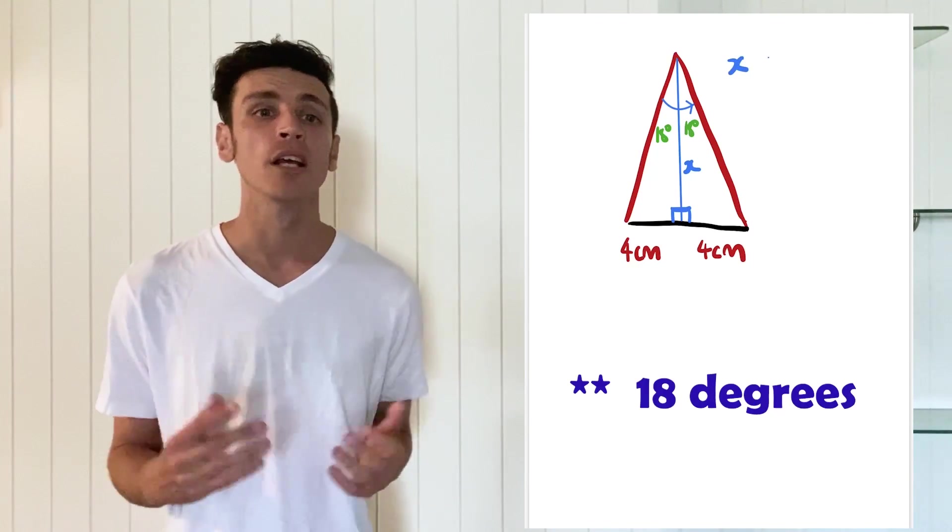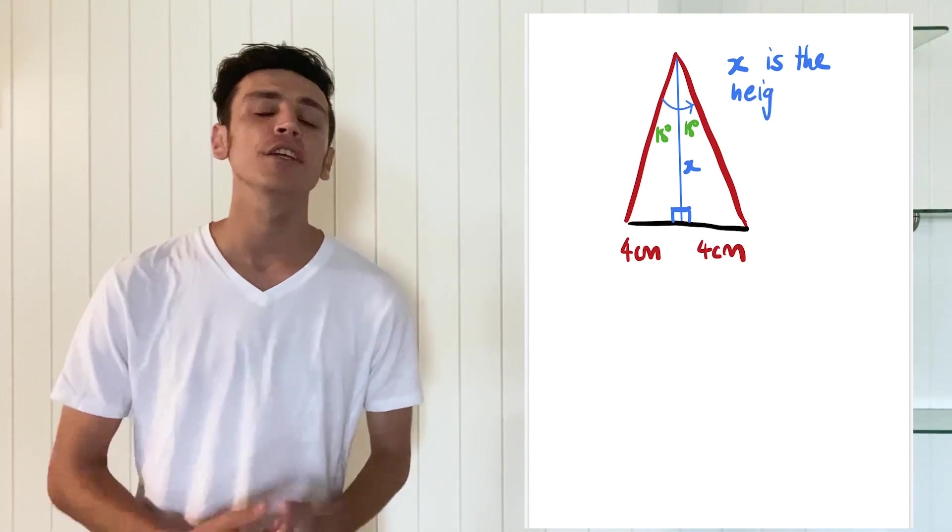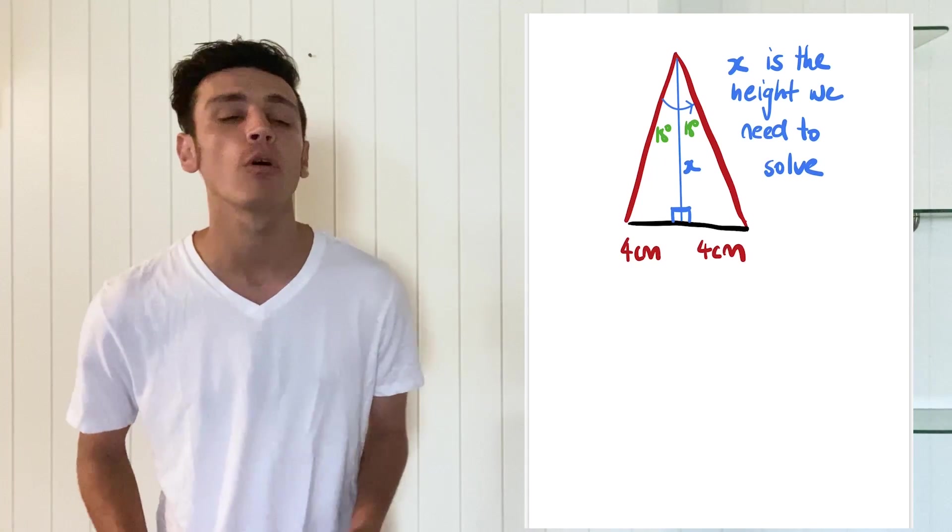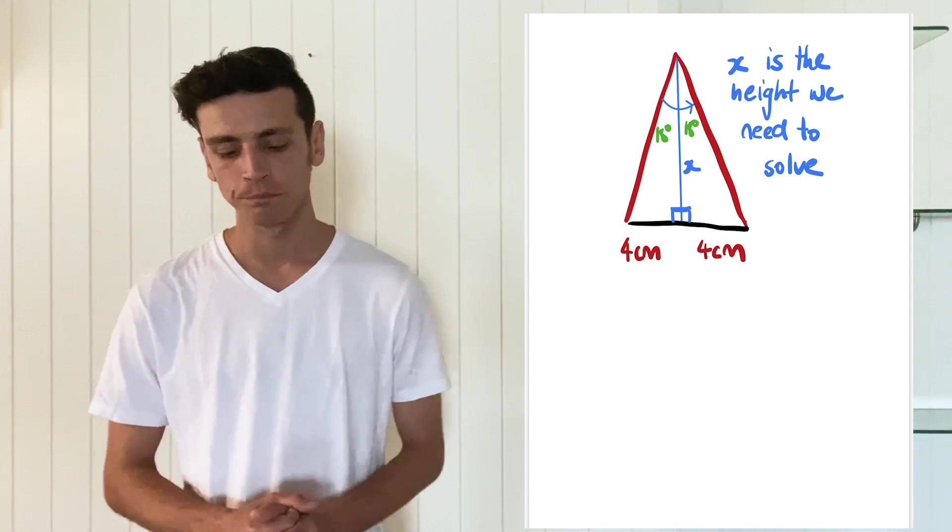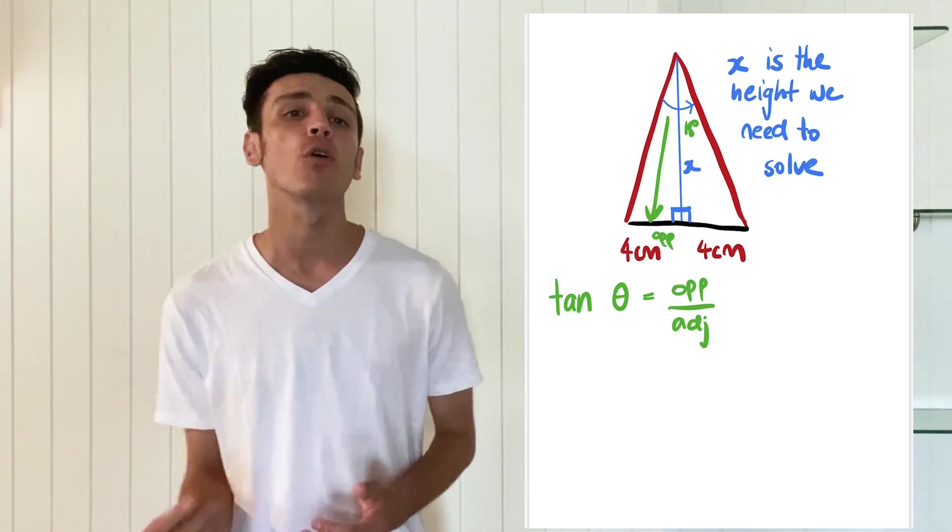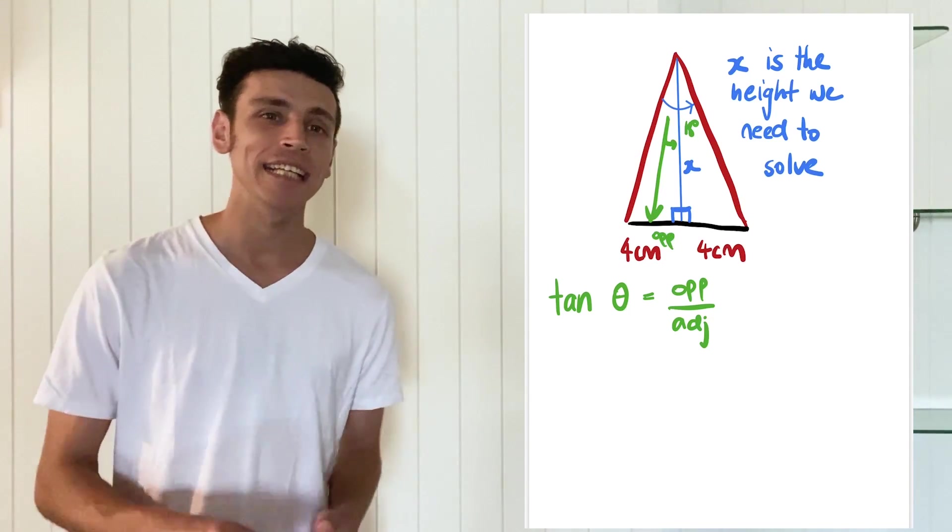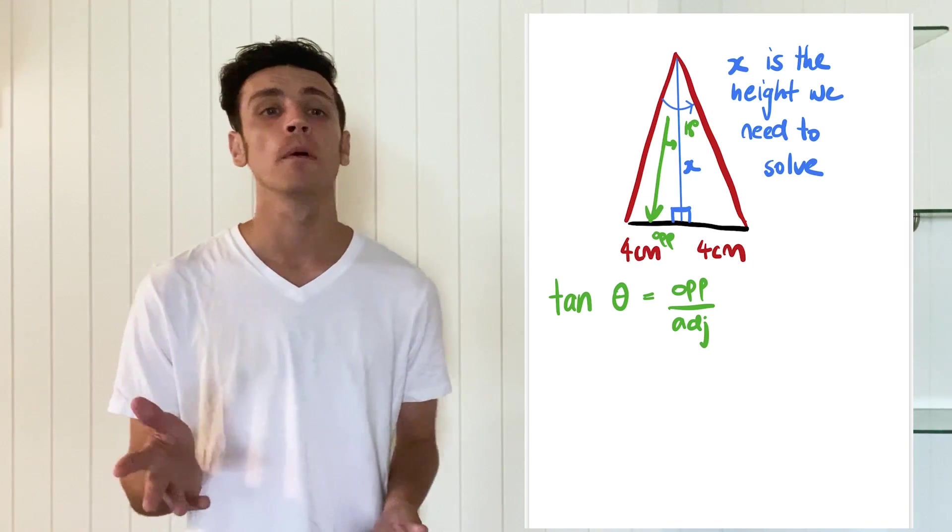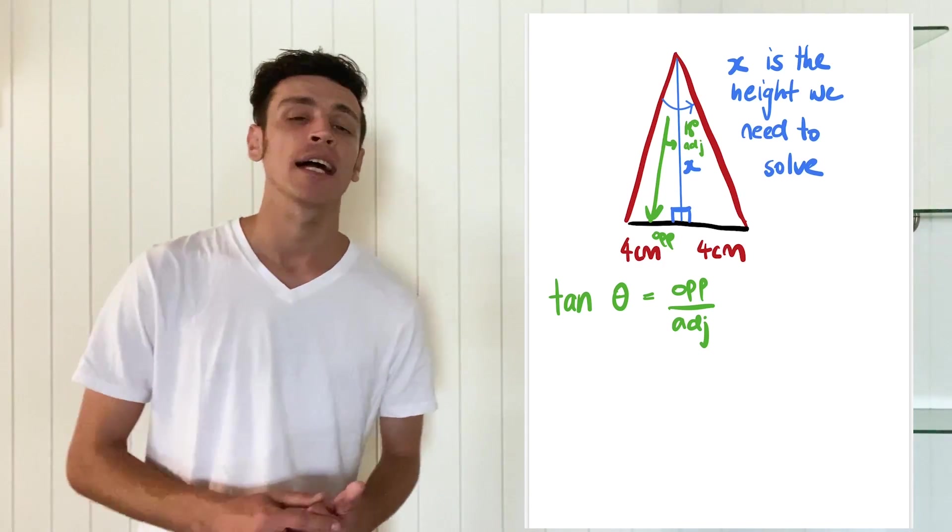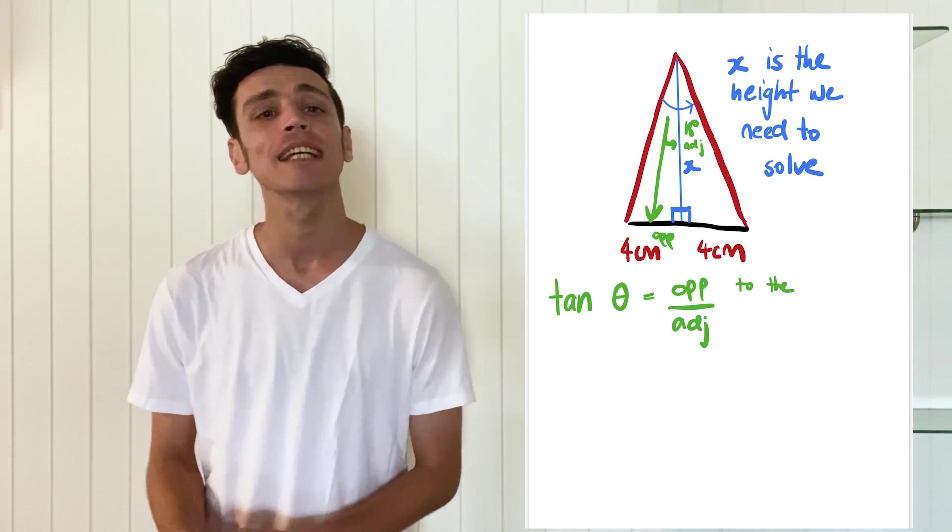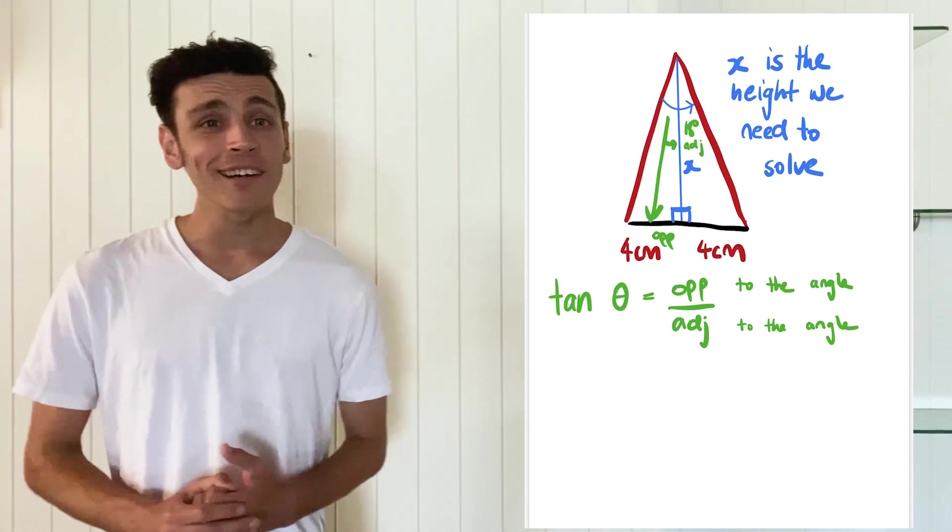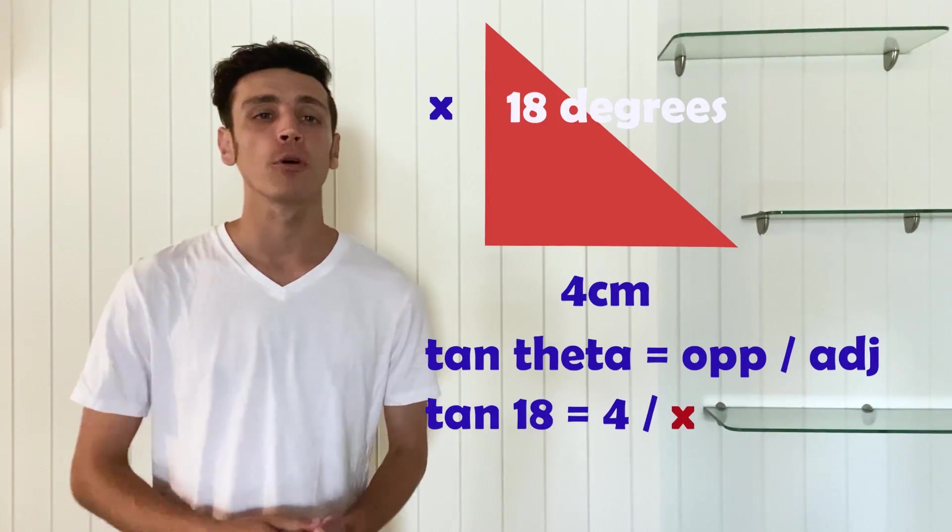So now what we do is we look at the one of the right angle triangles and we can use our tan formula in order to work out the height, because that's the one that we want. We want to work out the height of our triangle and the formula for this is tan θ equals opposite over adjacent. And what we're talking about when we're talking about opposite and adjacent is in regards to the angle. So we can see for example that the opposite side of our angle is our 4 centimeters, and our adjacent side is the one that we're trying to work out, and our angle is obviously going to be 18 degrees because remember it was half of 36.